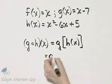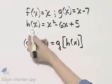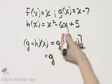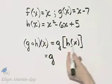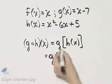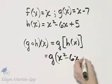I'll rewrite the g, and instead of h of x, I'll write what that's equal to. Notice we're given that h of x is equal to x squared minus 6x plus 5, so instead of h of x, I'll write x squared minus 6x plus 5.